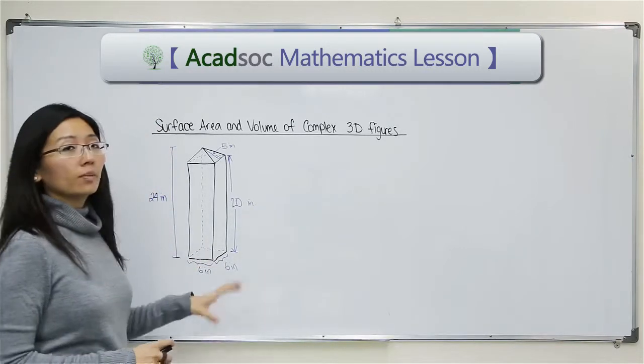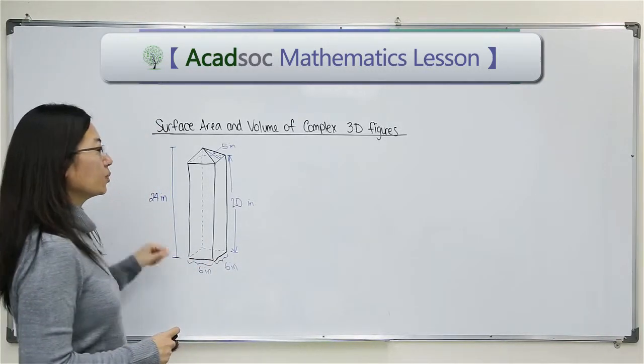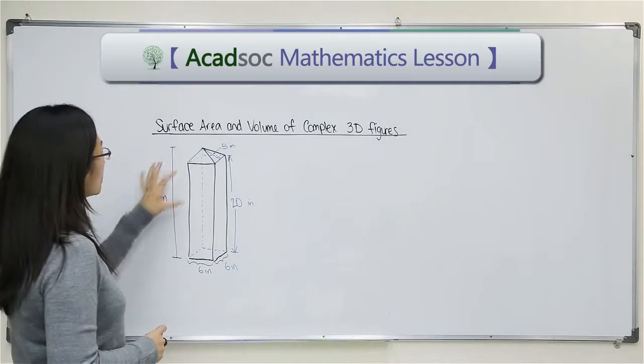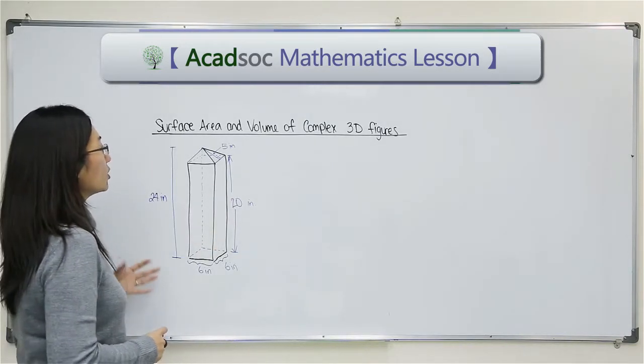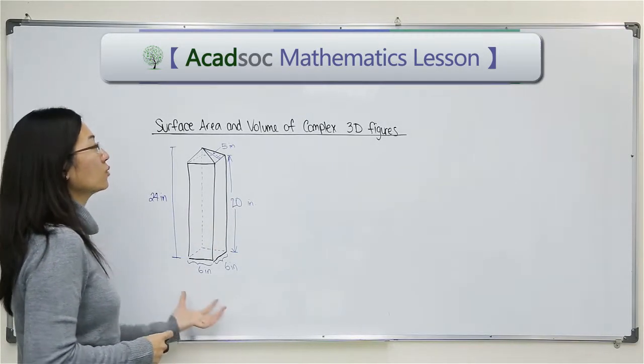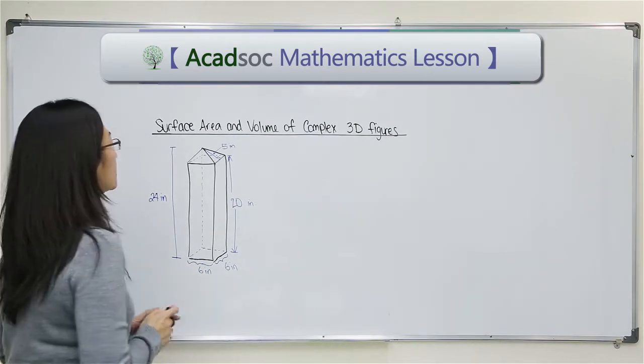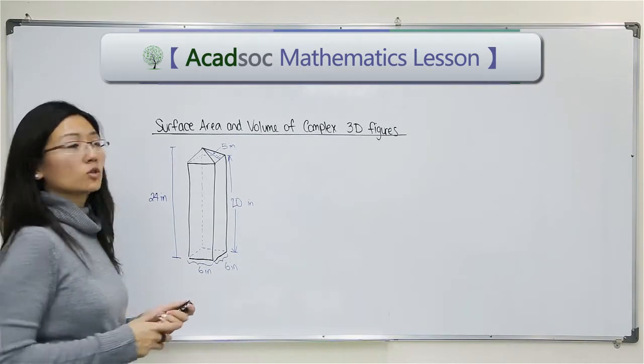For example, here we have a replica of the Washington Monument and these are the given measurements. Let's say I want to find the surface area of this replica of the Washington Monument. I can see that I have two three-dimensional shapes.